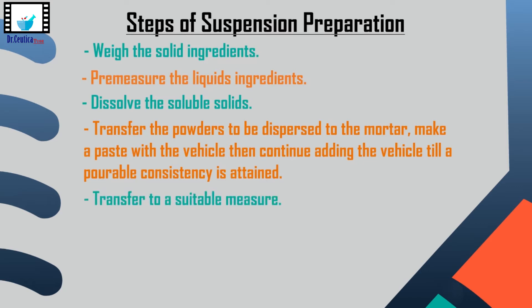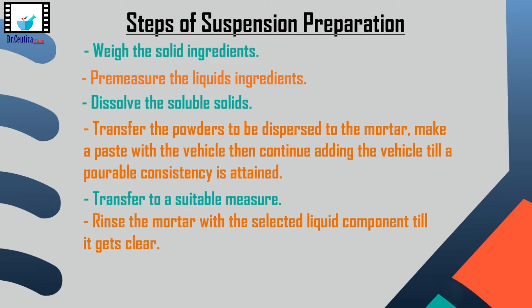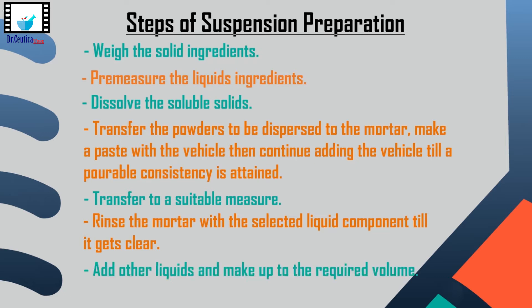The resultant suspension is transferred to a suitable measure — let's say a conical. The mortar is rinsed with the vehicle and the rinsings are added to the conical so that all the material is transferred. When we are sure the mortar is clear, we add the liquid ingredients to the conical, then make up to the required volume using the vehicle. Finally, we stir and transfer the prepared suspension to the container.